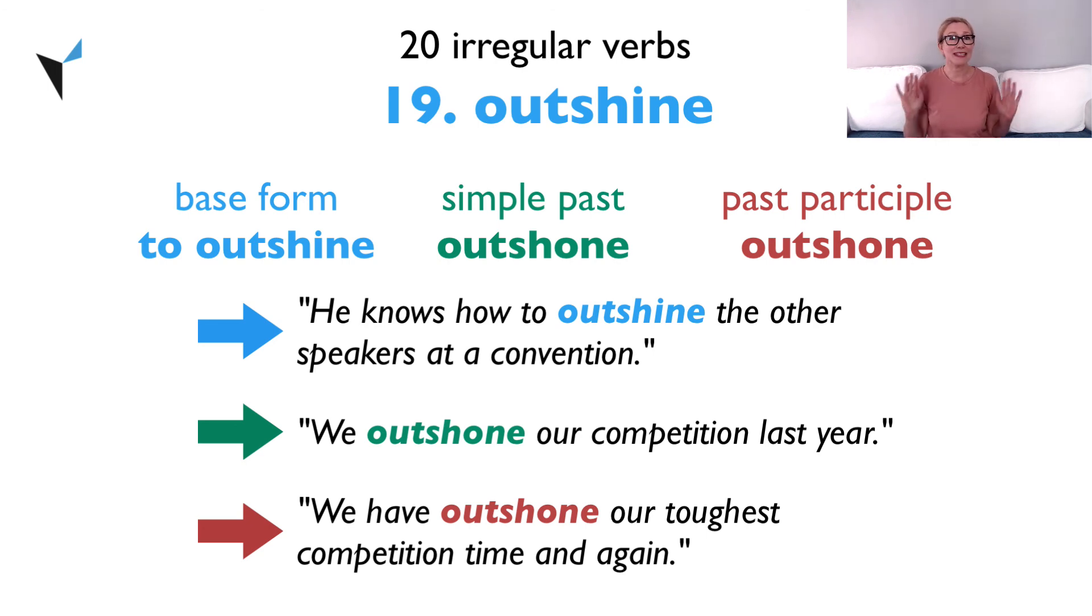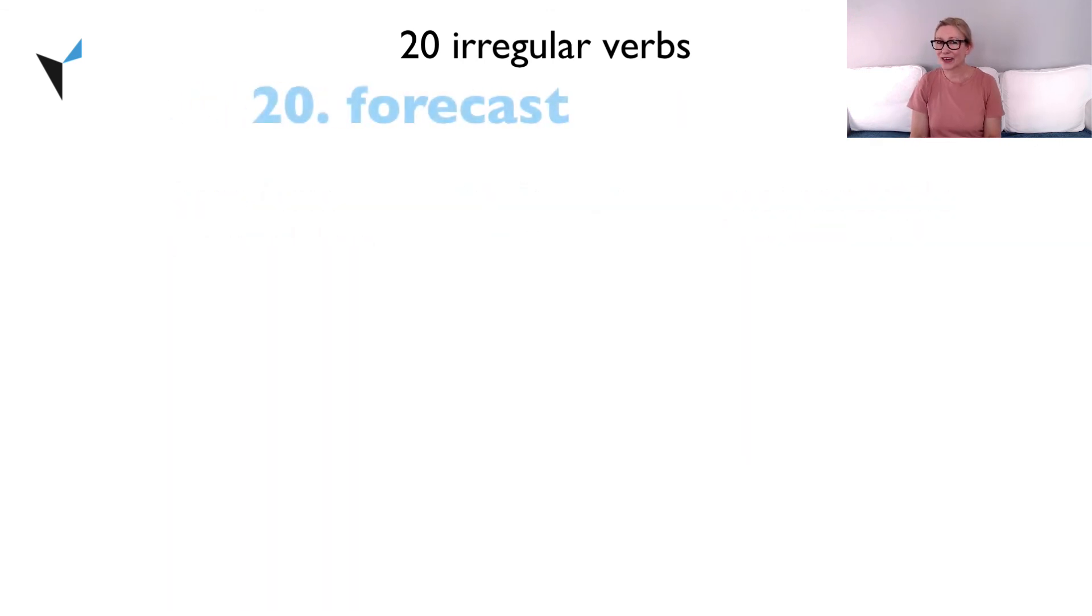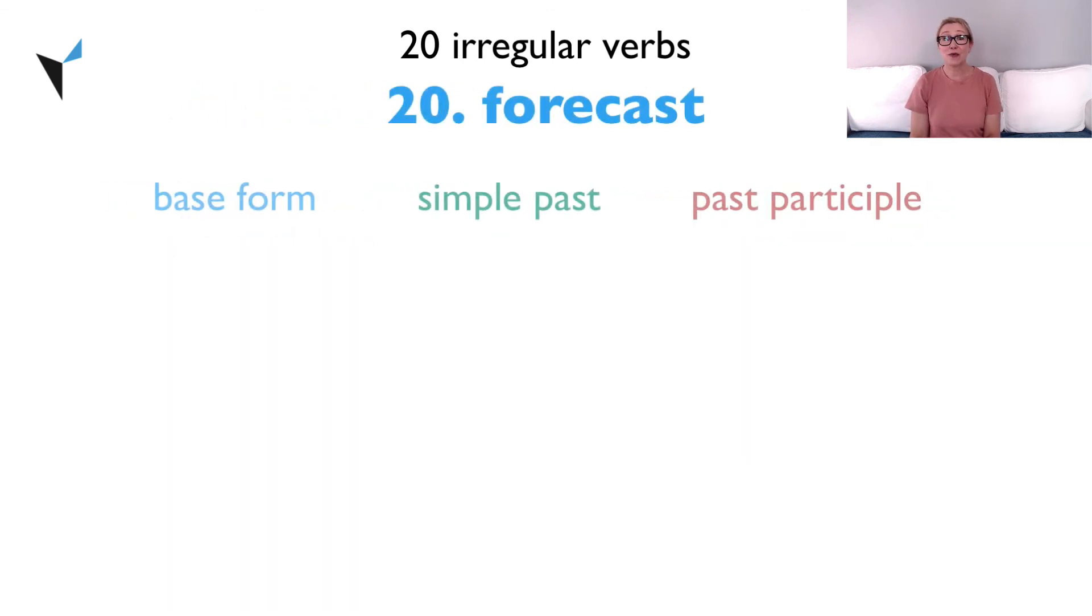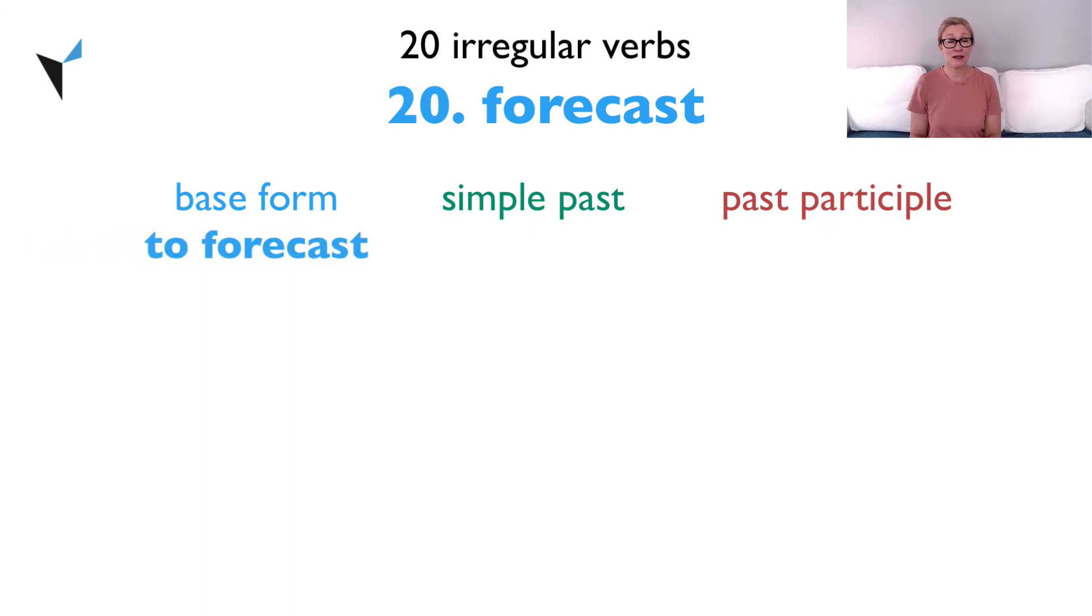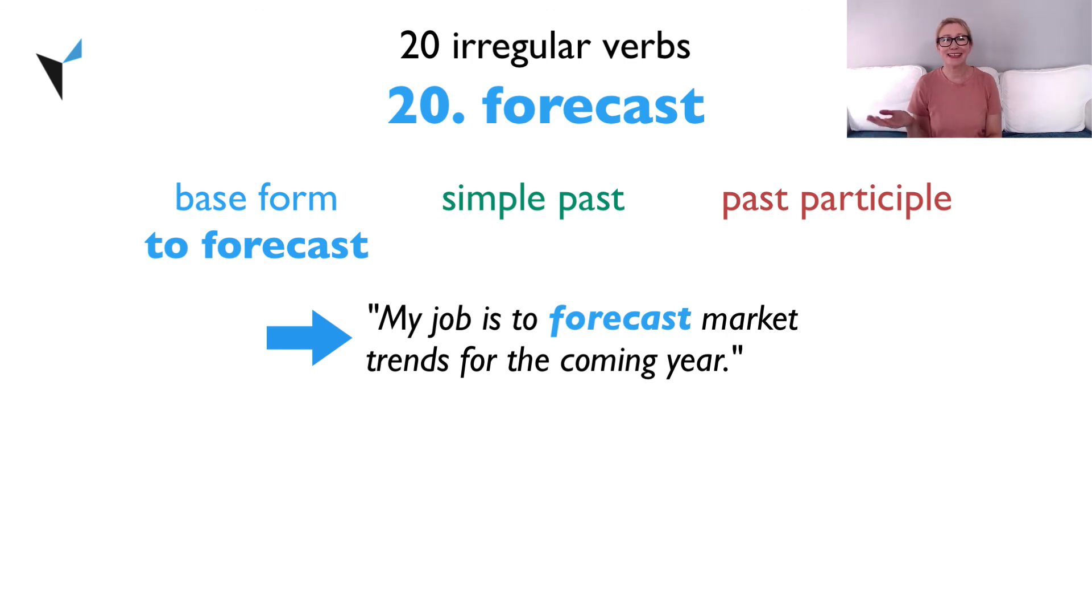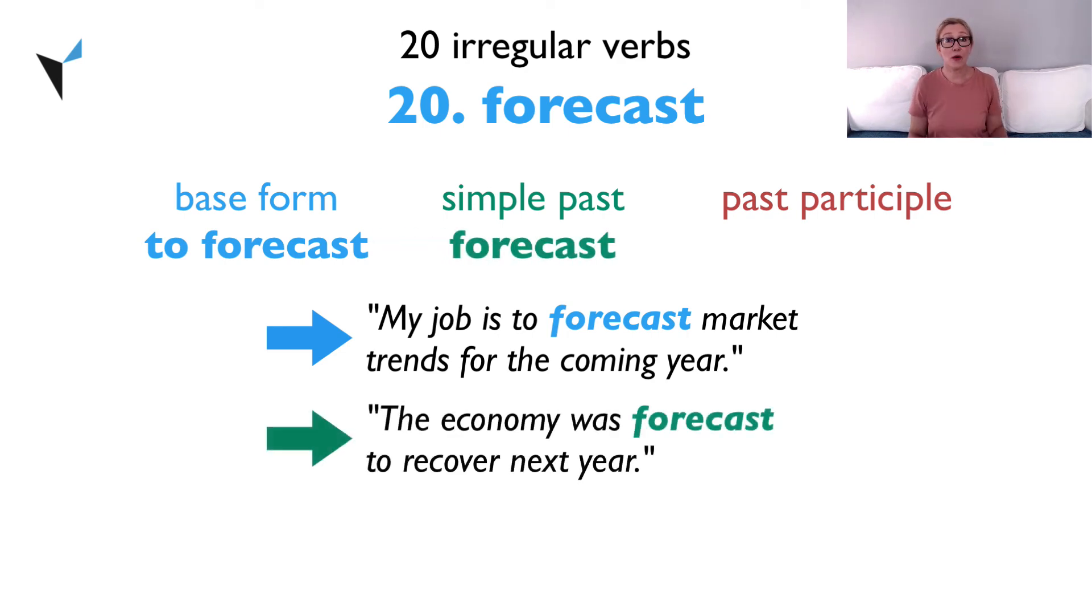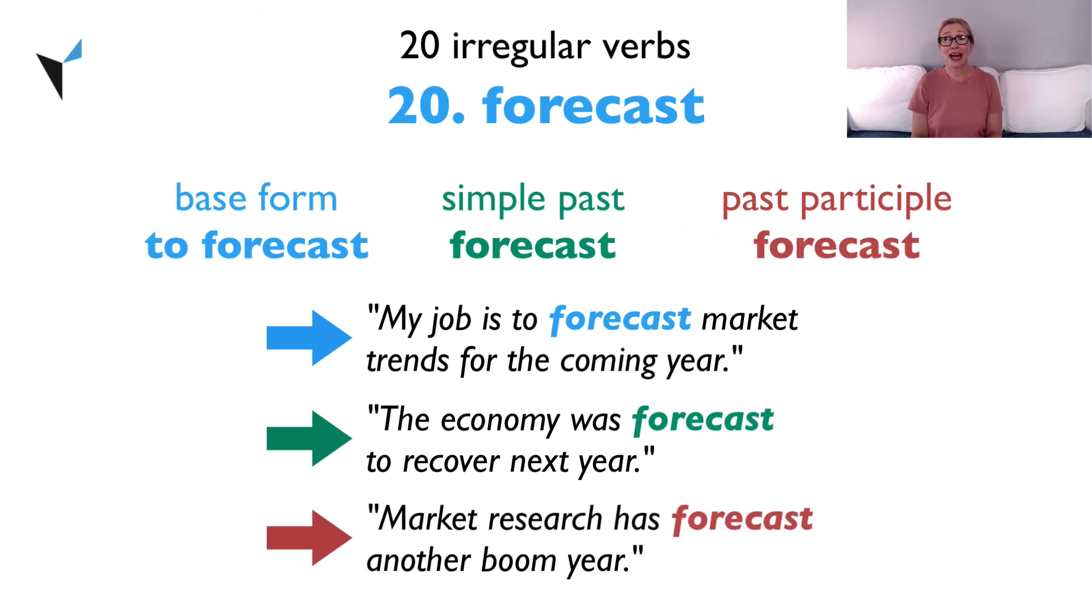And last but not least, on to verb 20 which will take us back to our example at the beginning of this video. Forecast. The base form is to forecast. My job is to forecast market trends for the coming year. The simple past is forecast. The economy was forecast to recover next year. And the past participle is also forecast. Market research has forecast another boom year.